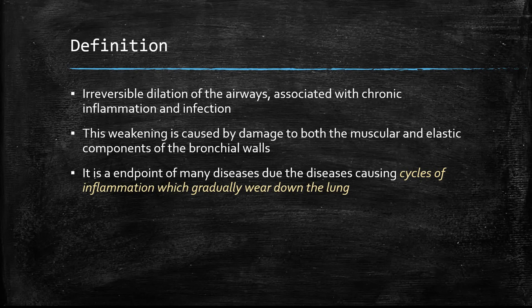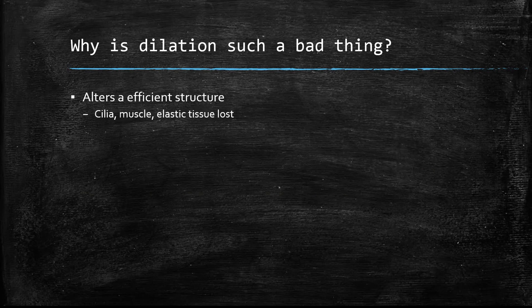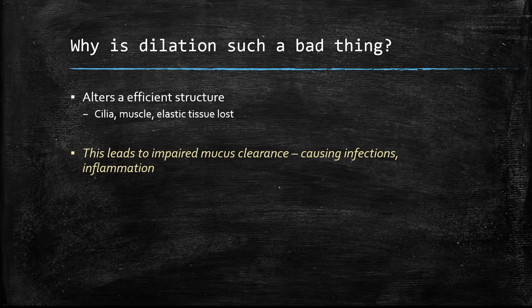Many diseases can cause the condition, but the key thing to know is that it's caused by gradual bouts of inflammation over and over again. The lung is a very efficient structure, and this dilatation affects the cilia, which means mucus cannot be cleared out of the lungs. It also affects the muscle and elastic tissue, leading to changes in structure and recoil.